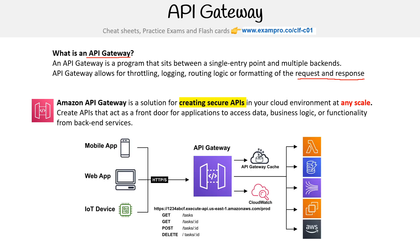The idea is that you have data coming in from mobile apps, web apps, IoT devices, and you actually define the API calls and then say where you want them to go. So maybe tasks are going to go to your Lambdas, and then other routes are going to go to RDS, Kinesis, EC2, or your web application. These are really great for being able to define your API routes and change them on the fly, and always route them to the same place.